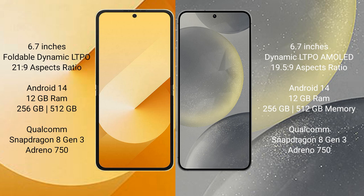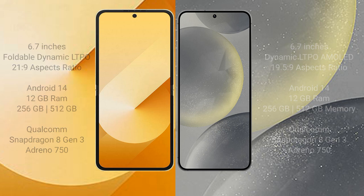The Samsung Galaxy Z Flip 6 comes with 12GB RAM and 256GB or 512GB internal storage, powered by the Qualcomm Snapdragon 8 Gen 1 processor with Adreno 730 GPU. The Samsung Galaxy S24 Plus also comes with 12GB RAM and 256GB or 512GB internal storage, but is powered by the Qualcomm Snapdragon 8 Gen 3 processor with Adreno 750 GPU.